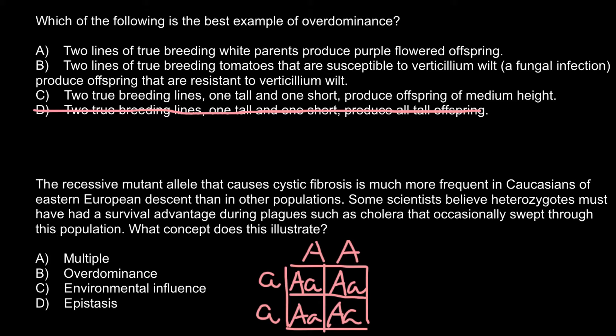Answer C: two true breeding lines, one tall and one short, produce offspring of medium height. This is a classical example of an additive trait. For example, imagine the dominant allele A gives 50 cm to plant height and the recessive allele a gives 25 cm to plant height. When we have a diploid homozygous dominant parent, the height would be 1 meter — this is the additive trait.